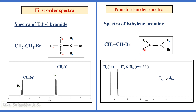Similarly, for HA and HB, double doublets are also seen, but their chemical shift values are very close to each other. Therefore, all these signals are grouped together, and such a complex pattern is seen for the spectra of vinyl bromide. In this case, the coupling of A with C and coupling of B with C is not the same, and delta nu by J is less than 6. Therefore, this is a non-first order spectra. These are the criteria for first order and non-first order, that is second order, spectra.